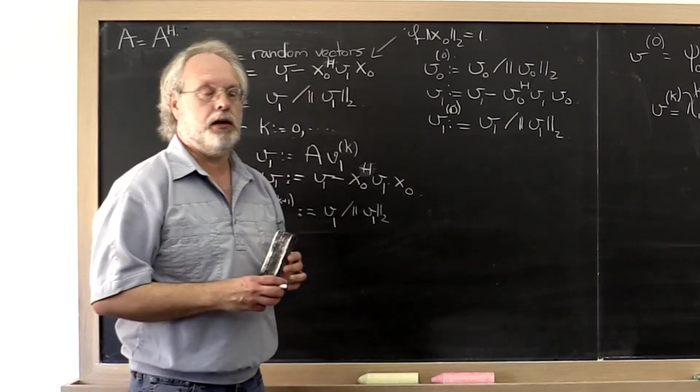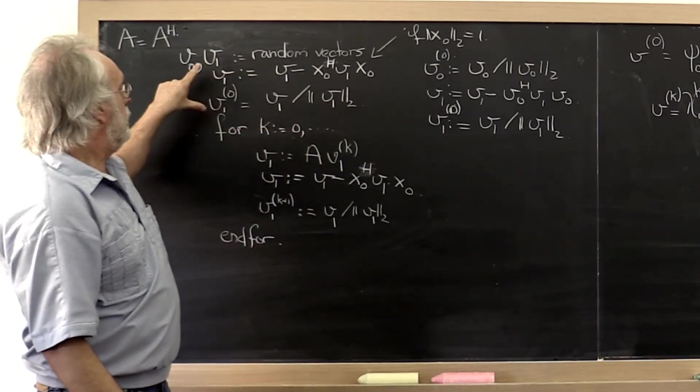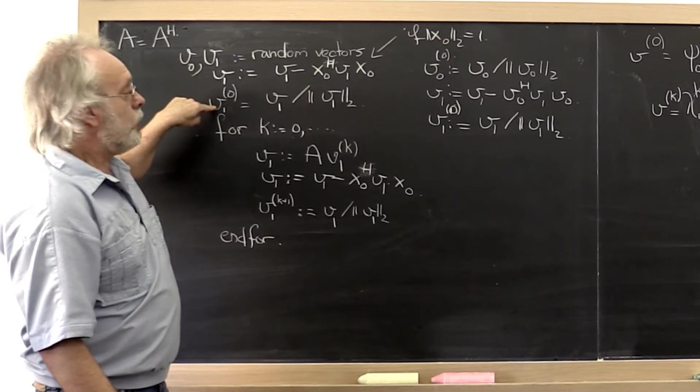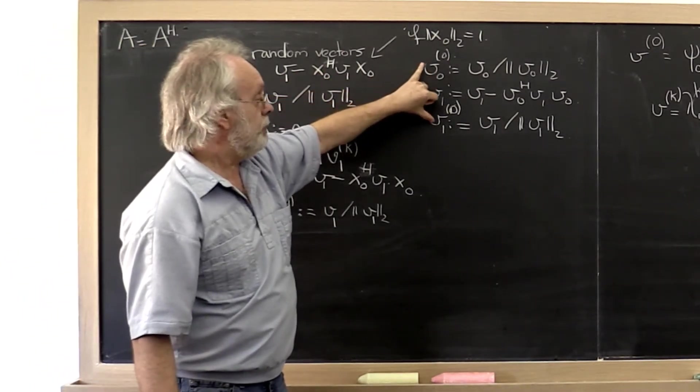We saw that in week 3, if we said, let's create two mutually orthonormal vectors v0,0, and v1,0.